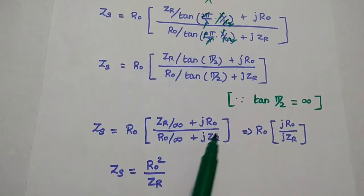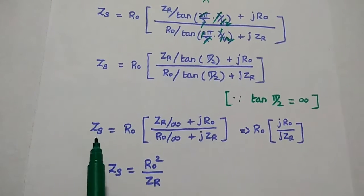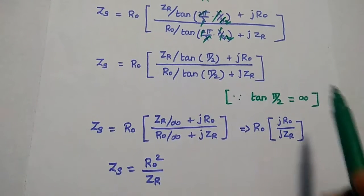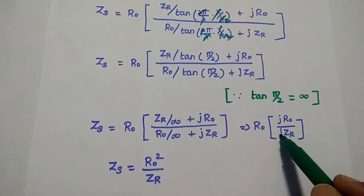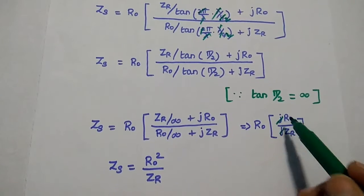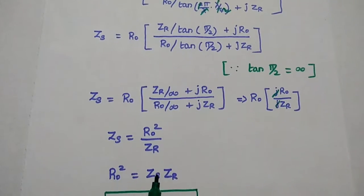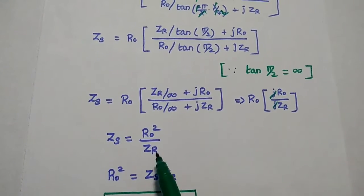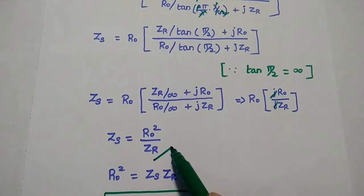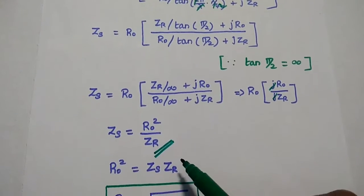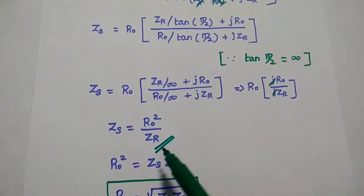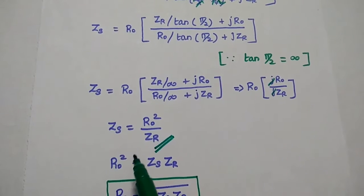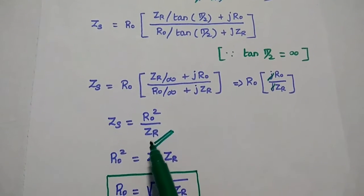With the zero substitutions, we get Zs equal to R naught into j R naught, divided by j ZR. The j terms cancel, and finally we get Zs equal to R naught squared divided by ZR. This is the value of the input impedance for the quarter wave transformer.